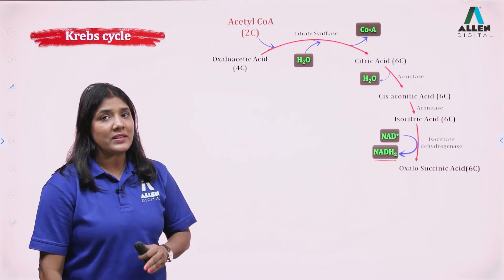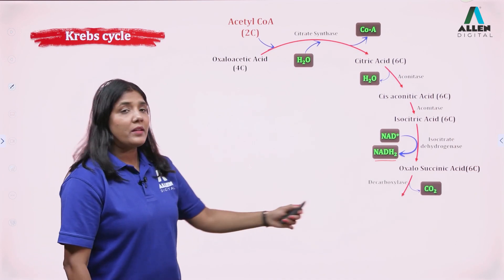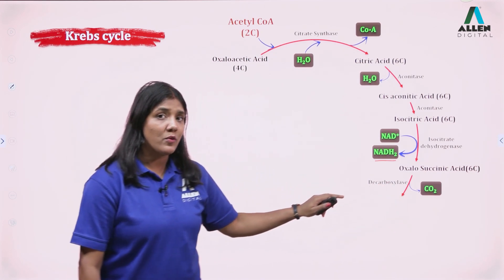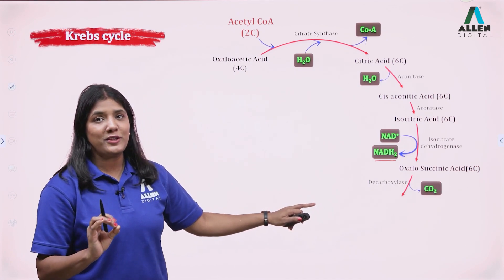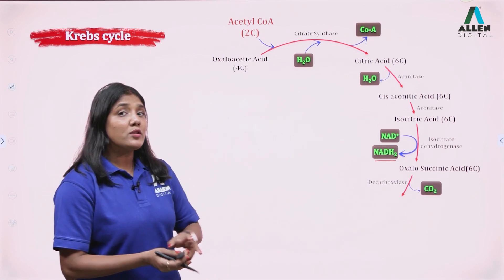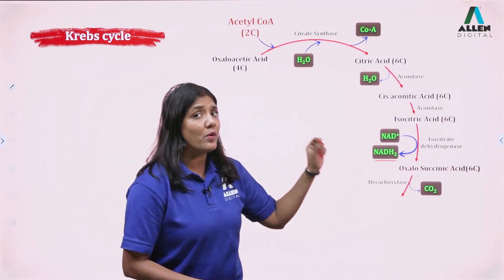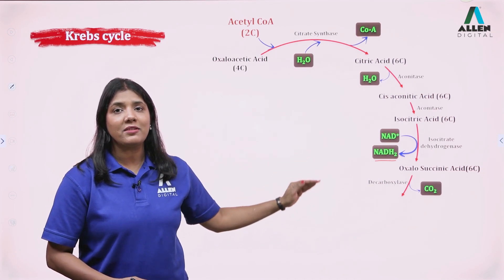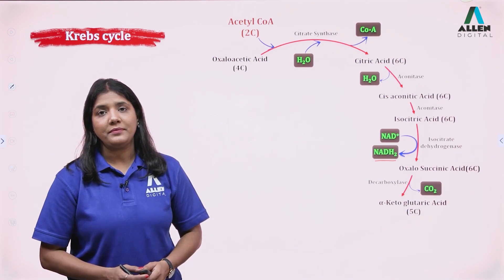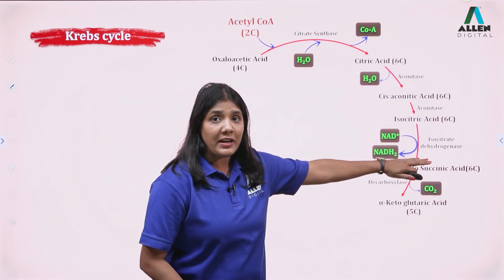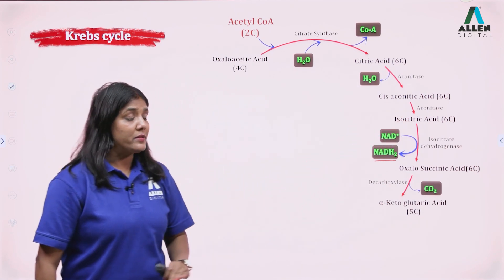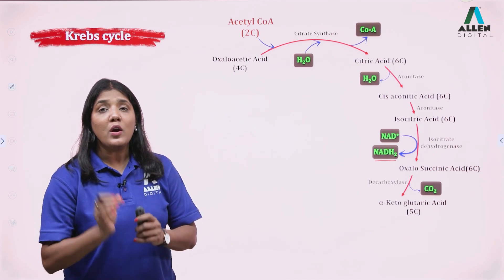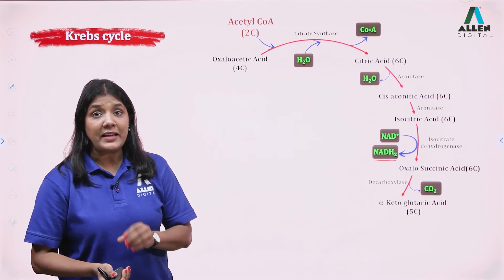We now have six-carbon oxalosuccinic acid, which will be converted into alpha-ketoglutaric acid by the enzyme decarboxylase. Decarboxylase removes CO2. From a six-carbon compound, removing one carbon leaves a five-carbon compound — alpha-ketoglutaric acid — which is the only five-carbon compound in the entire citric acid cycle. So we have seen our first dehydrogenation step from isocitric acid to oxalosuccinic acid, and this is the first decarboxylation step, from oxalosuccinic acid to alpha-ketoglutaric acid.